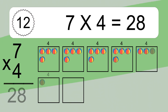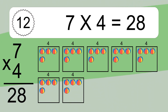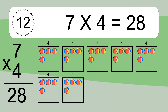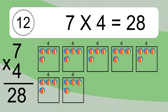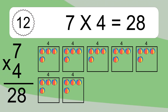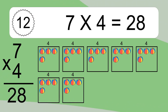7 times 4 equals what? 7 times 4 equals 28. We have 7 boxes, and each box has 4 colorful balls inside. If you count all the balls in all the boxes together, you will have 7 times 4 balls. This equals 28 balls.